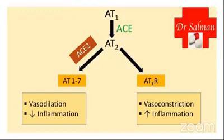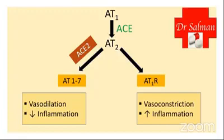What the virus does is block the functioning of ACE2. This means excess action of AT1 receptors, leading to more vasoconstriction and more inflammation. This is one of the factors contributing to the cytokine storm — excessive inflammation occurring in patients. This could be one of the main contributory factors.